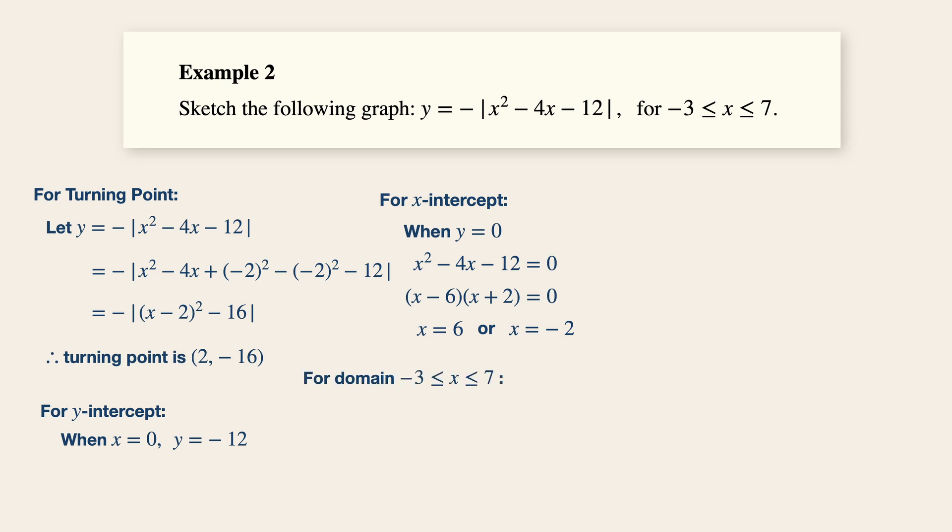Now, to get the domains minus 3 less than equals to x less than equals to 7, when x is equals to minus 3, y is equals to minus 9 plus 12 minus 12 modulus, which gives us a value of minus 9.